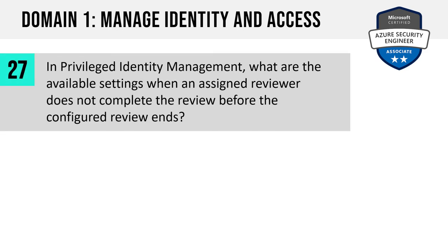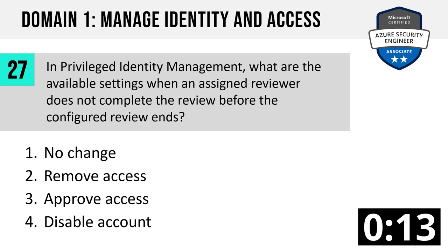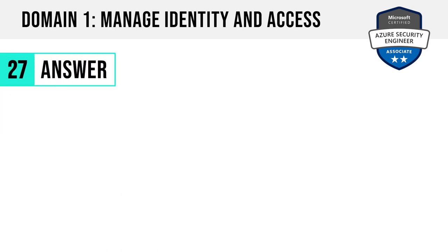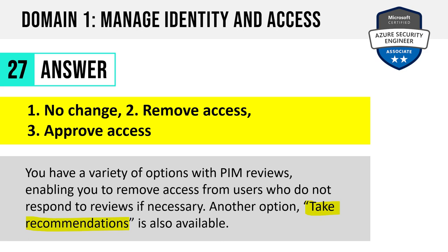Question 27. In Privileged Identity Management in Azure AD, what are the available settings when an assigned reviewer does not complete the review before the configured review ends? Options are no change, remove access, approve access, and disable account. The answer is no change, remove access, and approve access — essentially anything except the disable account option. You have a variety of options in PIM reviews to remove access from users that don't respond, leave existing access in place, or take recommendations.